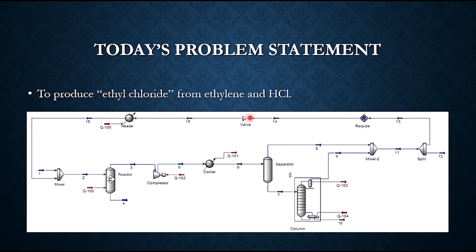Streams nine and eight are mixed, then split — part is purged while the remaining part is recycled. Recycling is done by first passing through a valve to let down the pressure, then heating to the feed temperature. A mixer is installed to ensure that during the recycling process there is no significant abruption or abnormality in the process.